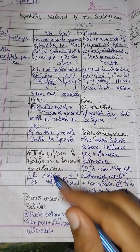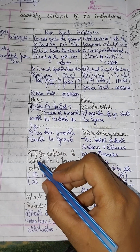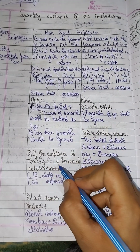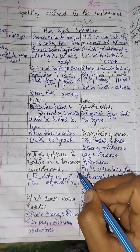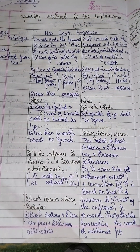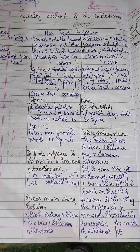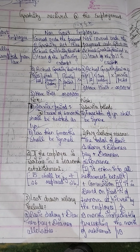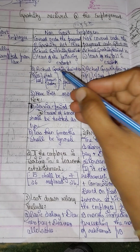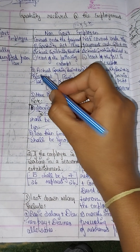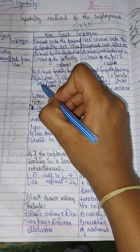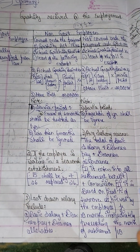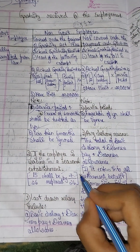The second note is: if the employee is working in a seasonal establishment, the service period calculation may differ — fractions of the year are treated accordingly.